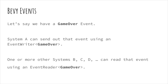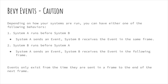Let's say we've created a GameOver event. System A can send out that event using an event writer of type GameOver. One or more other systems — B, C, D, etc. — can read that event using an event reader of type GameOver. Depending on how your systems are run, you can have one of two behaviors: when System A runs before System B, System A sends an event and System B receives the event in the same frame. When System B runs before System A, System A sends an event and System B receives the event in the following frame. Events only exist from the time they are sent in a frame to the end of the next frame.